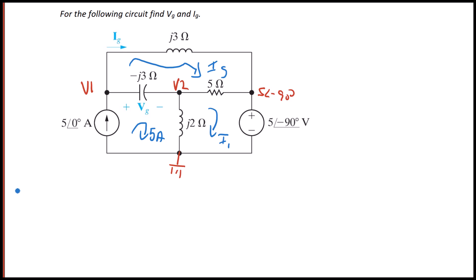So if you're going to do the mesh current method, you're going to get two equations. And the two equations are going to be, starting with IG, J3 IG plus five times IG minus I1 minus J3 times IG minus five, and that equals zero.